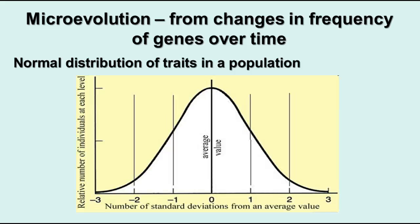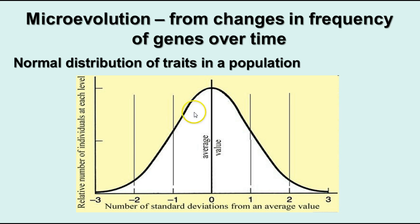Microevolution is about changes in the frequency of genes over time. Looking at this curve — similar to what we saw with the skin color curve — this is called a normal distribution of traits in a population. The average value usually has the highest number of individuals exhibiting that trait, and as you move farther from the average in either direction there are fewer and fewer until you reach the extremes. This bell-shaped curve is the normal distribution you see in polygenic traits, like the skin color graph from genetics.